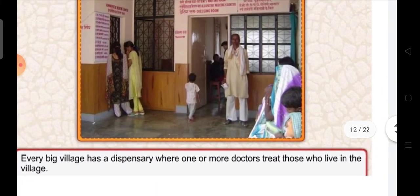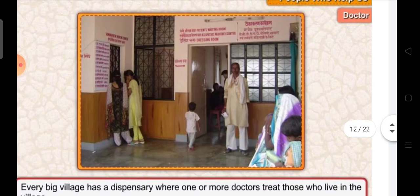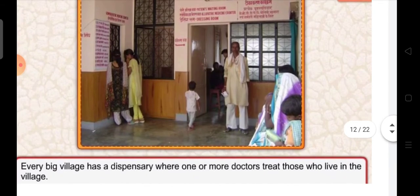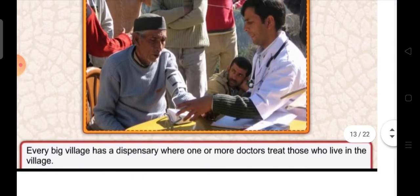Every big village has a dispensary where one or more doctors treat those who live in the village. You can see in the picture it is a dispensary where people are standing. This doctor is treating his patient in the village, as only one or more doctors treat the patients in villages.